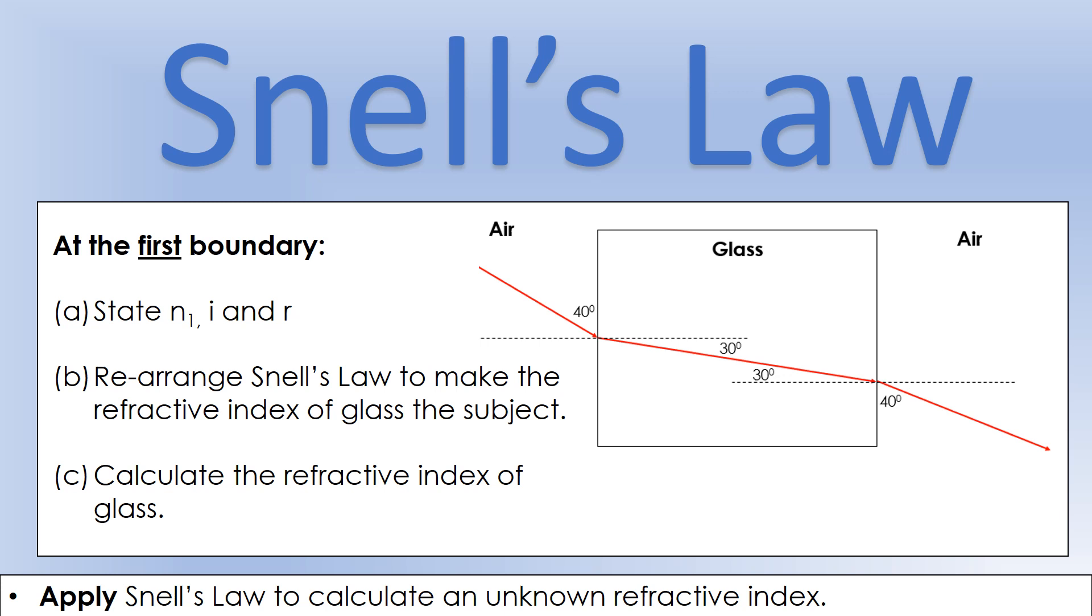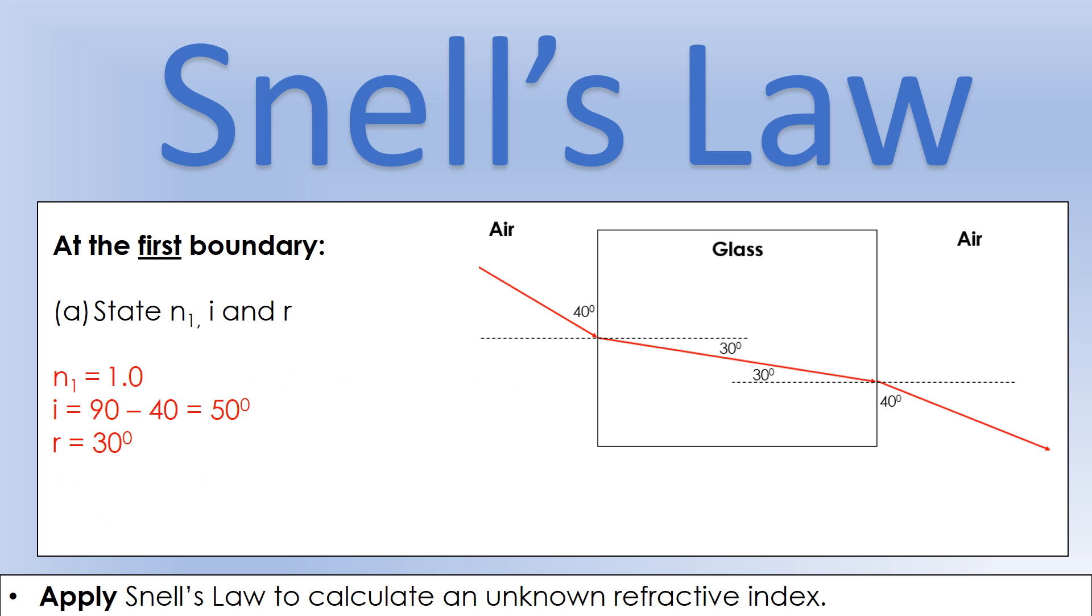I'm assuming that you've now had an attempt at these questions. First of all, at the first boundary it starts in air, so n1 is going to be 1.0. The angle of incidence is 50 degrees, remember the angle should be measured to the normal, and the angle of refraction is 30 degrees.